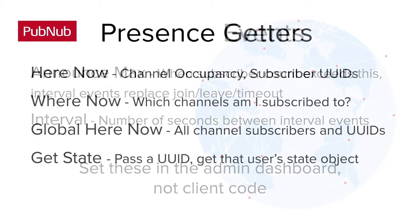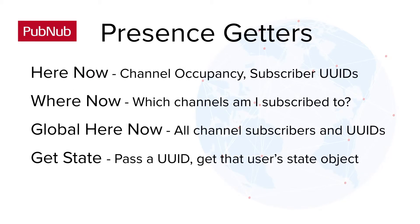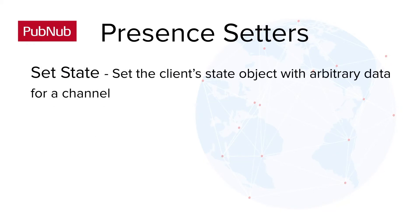There are four accessor methods in the client SDK that allow you to ask for subscriber details like the members in a channel and their state object. The one mutator is a set state method that allows you to pass a custom object. Setting the user's state will fire a set state event to all subscribers.